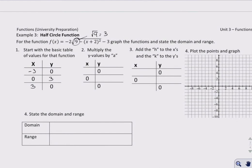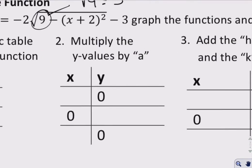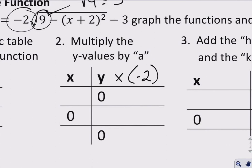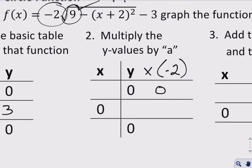As above, we're multiplying the y values by a. In this case, a is represented by negative 2. So y is multiplied by negative 2, and that gives me 0 here, negative 6 here, and 0 here again.